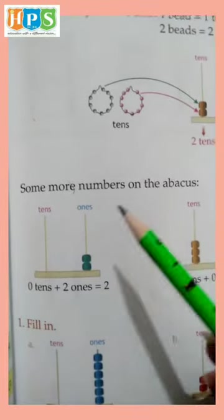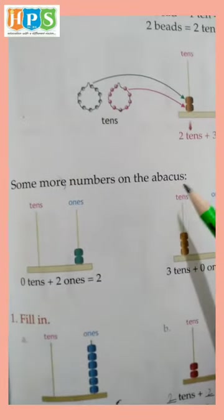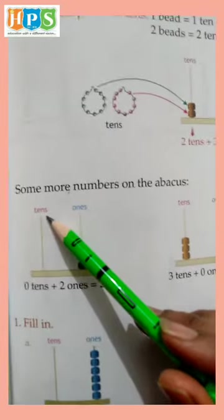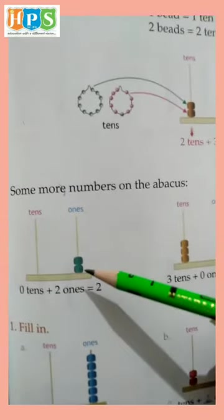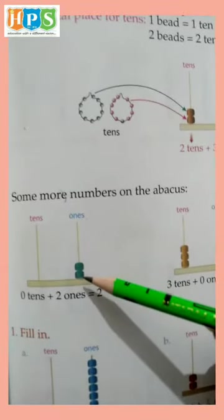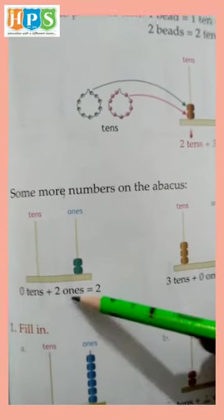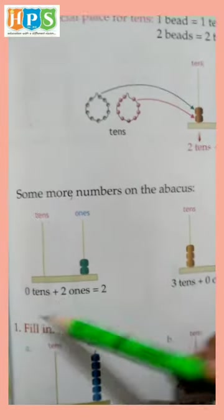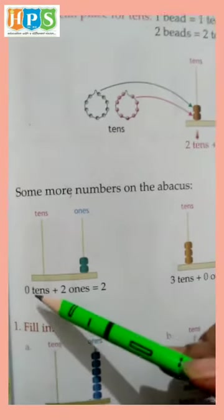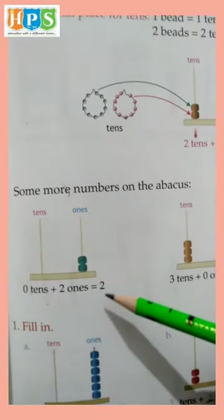Some more numbers on the abacus, ones and tens. One, two - two ones plus zero tens, so zero and two equals twenty-two.